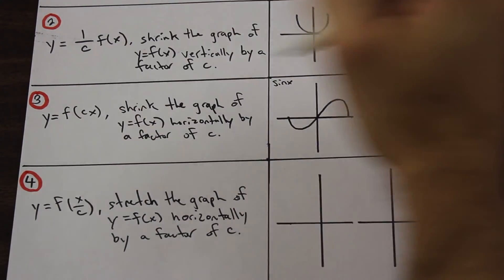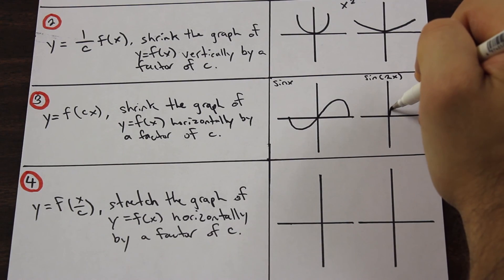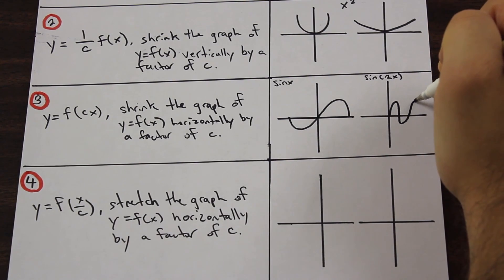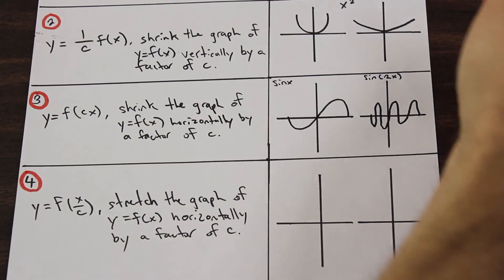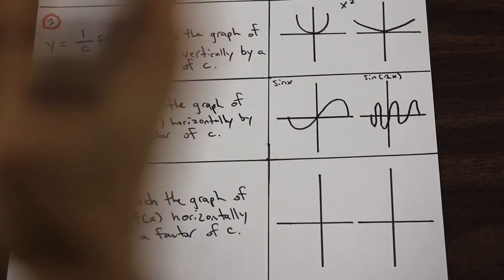If we apply this transformation here, we're going to get a sine graph that looks kind of like this. So it's being compressed similar to this one. It's being compressed horizontally.